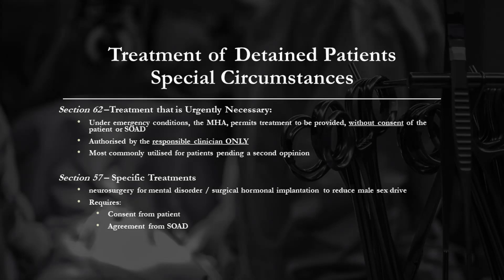There are special circumstances where, outside of the above guidelines, treatment may be required. Where emergency treatment for the mental health condition is required but no SOAD or second opinion is readily available, the responsible clinician can authorise such treatment under Section 62 of the Mental Health Act. This is most commonly for patients who are still awaiting a second opinion.